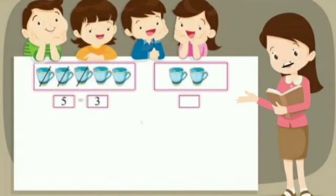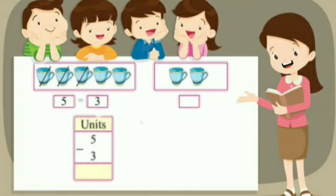Let's start. Khritra has five cups. He gave three cups to Achel. How many cups are left with Khritra? Khritra has five cups to take, and he gave Achel three cups.